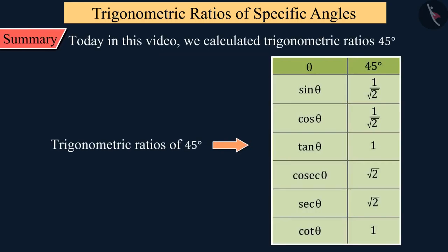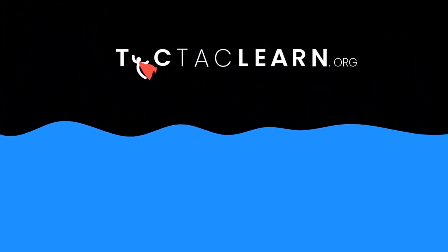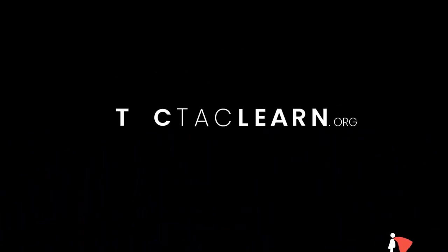Today in this video we calculated the trigonometric ratios of 45-degree angles. In the next video, we will see how Simran will find the trigonometric ratios of 30 degrees and 60 degrees angles.